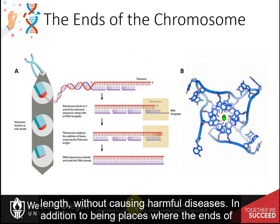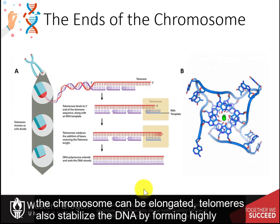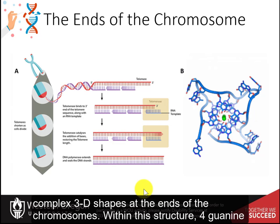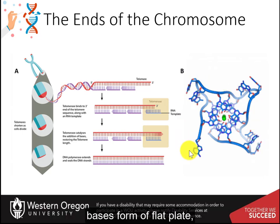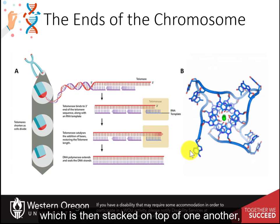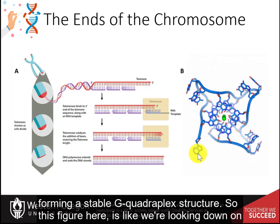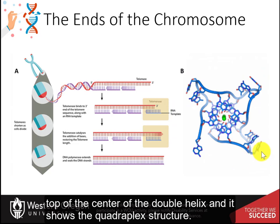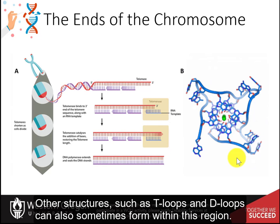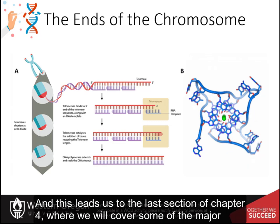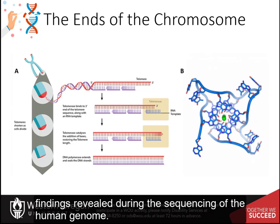In addition to being places where the ends of the chromosomes can be elongated, telomeres also stabilize the DNA by forming highly complex three-dimensional shapes at the ends of the chromosomes. Within this structure, four guanine bases form a flat plate, which is then stacked on top of one another, forming a stable G-quadruplex structure. This figure shows the quadruplex structure looking down on top of the center of the double helix. Other structures, such as T-loops and D-loops, can also sometimes form within this region. This leads us to the last section of Chapter 4, where we will cover some of the major findings revealed during the sequencing of the human genome.